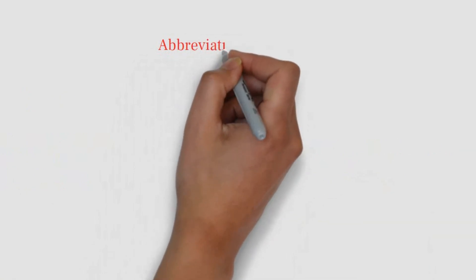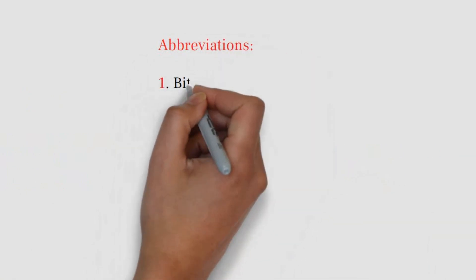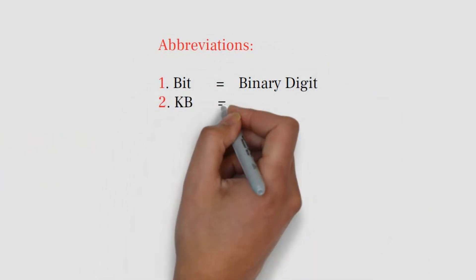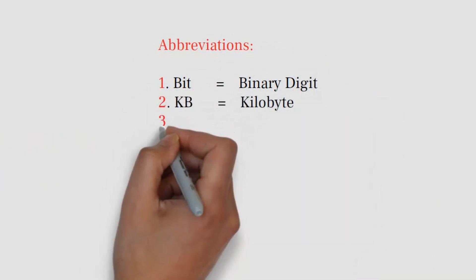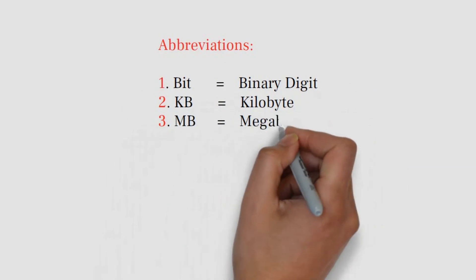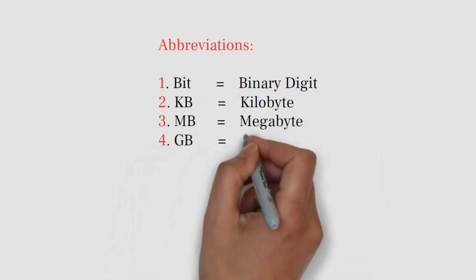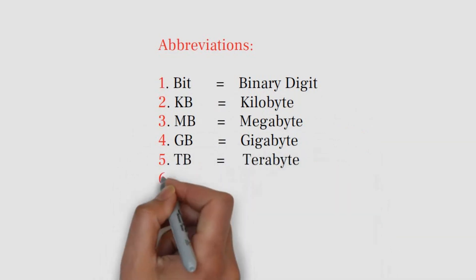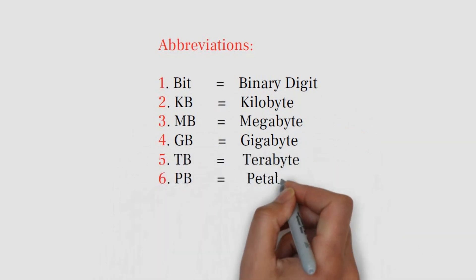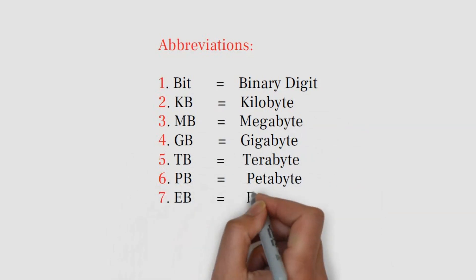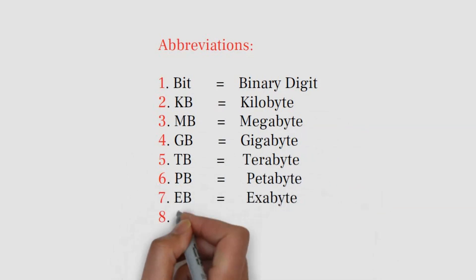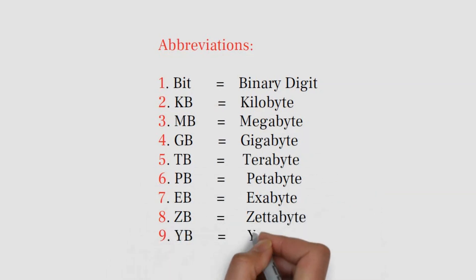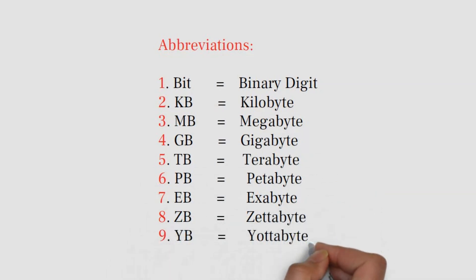Abbreviations: 1. Bit stands for binary digit. 2. KB stands for kilobyte. 3. MB stands for megabyte. 4. GB stands for gigabyte. 5. TB stands for terabyte. 6. PB stands for petabyte. 7. EB stands for exabyte. 8. ZB stands for zetabyte. 9. YB stands for yotabyte.